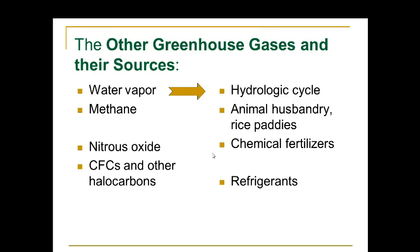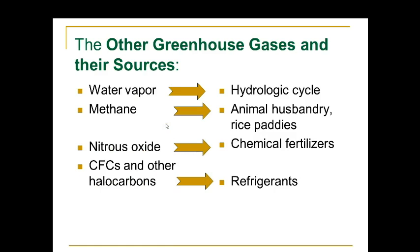Other greenhouse gases: water vapor is a greenhouse gas and it comes about through the hydrologic cycle. Methane comes from animal husbandry and rice paddies. Nitrous oxide comes from chemical fertilizers. And CFCs and other halocarbons are good refrigerants. All of these are greenhouse gases, which is why we are no longer allowed Freon in our air conditioners.